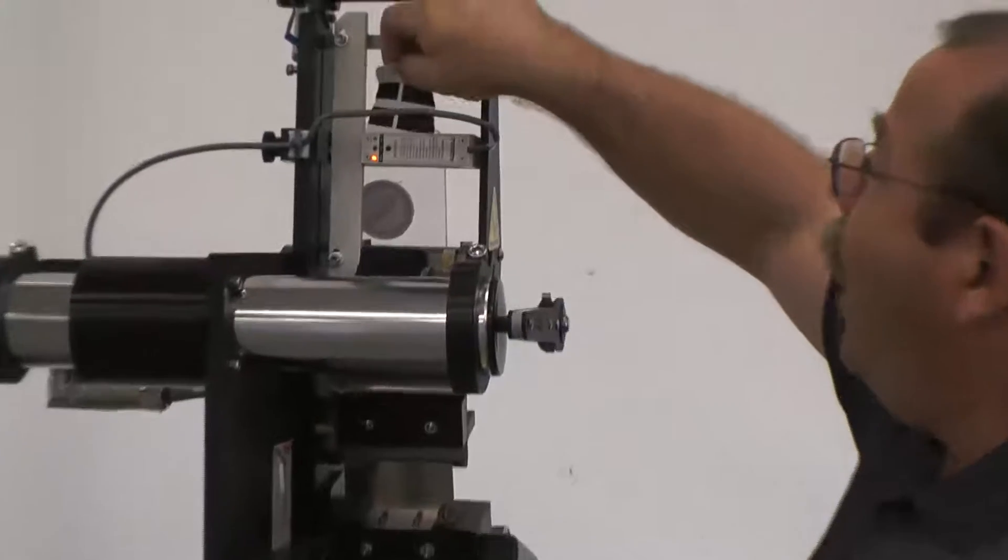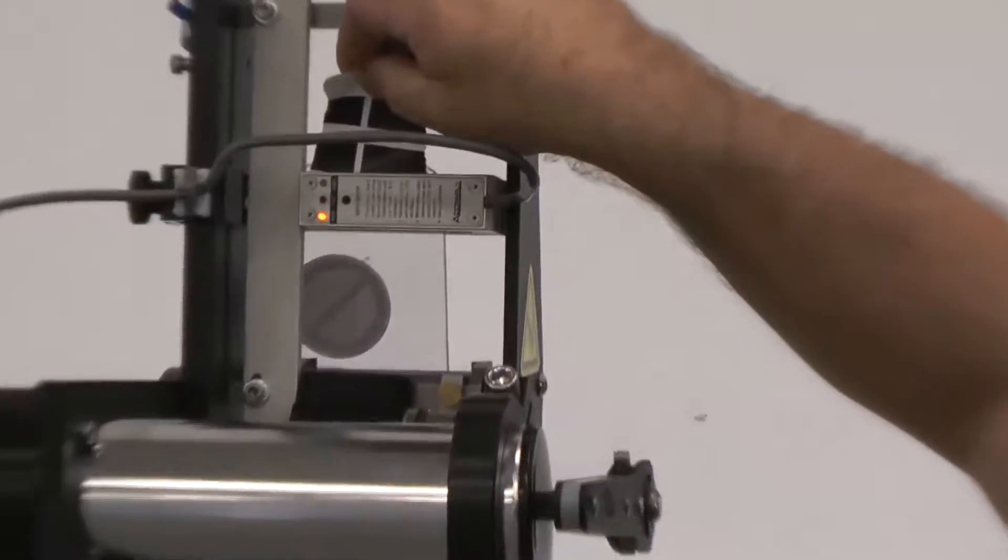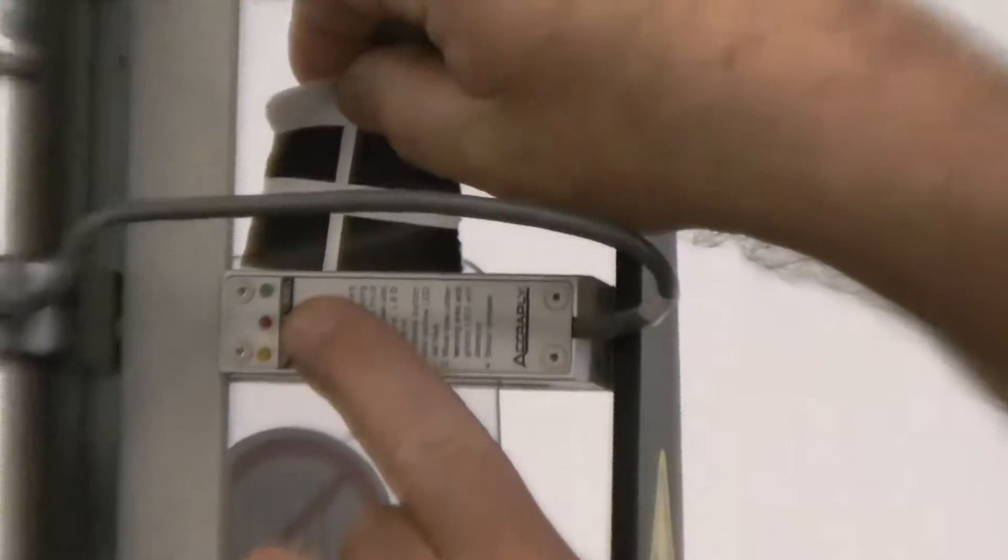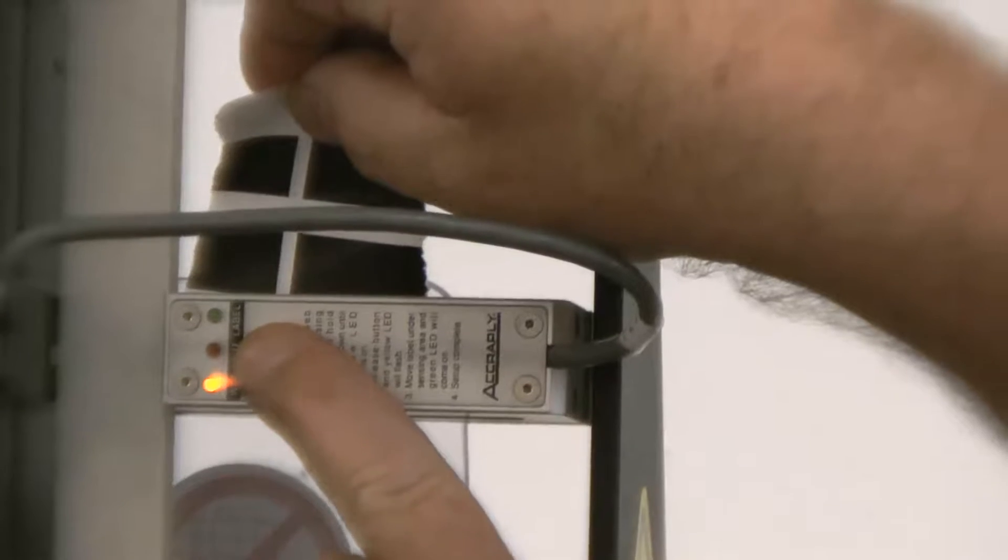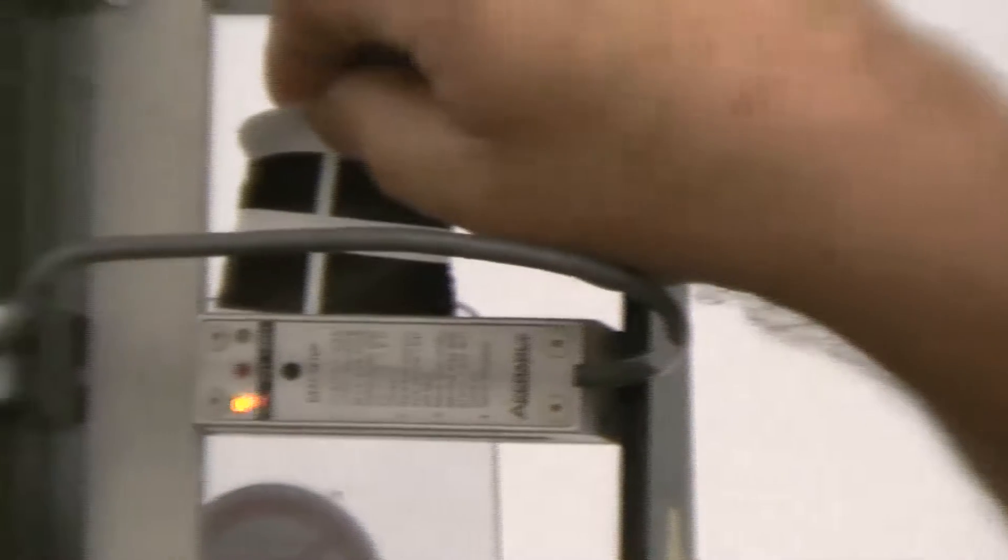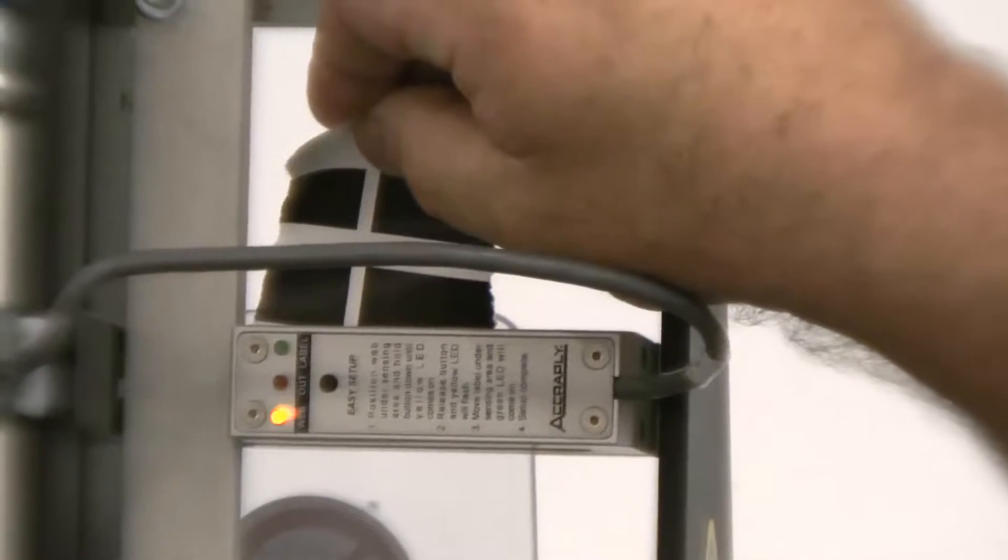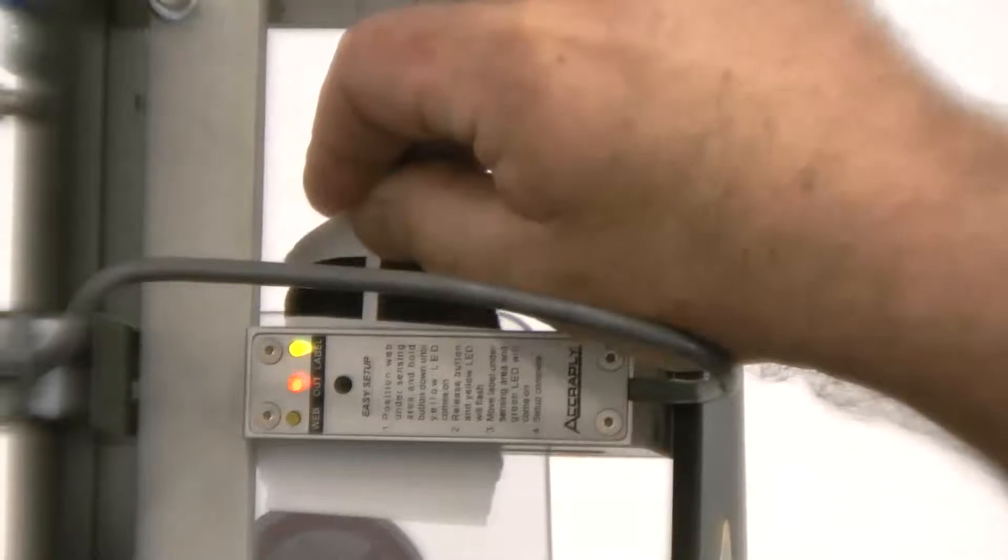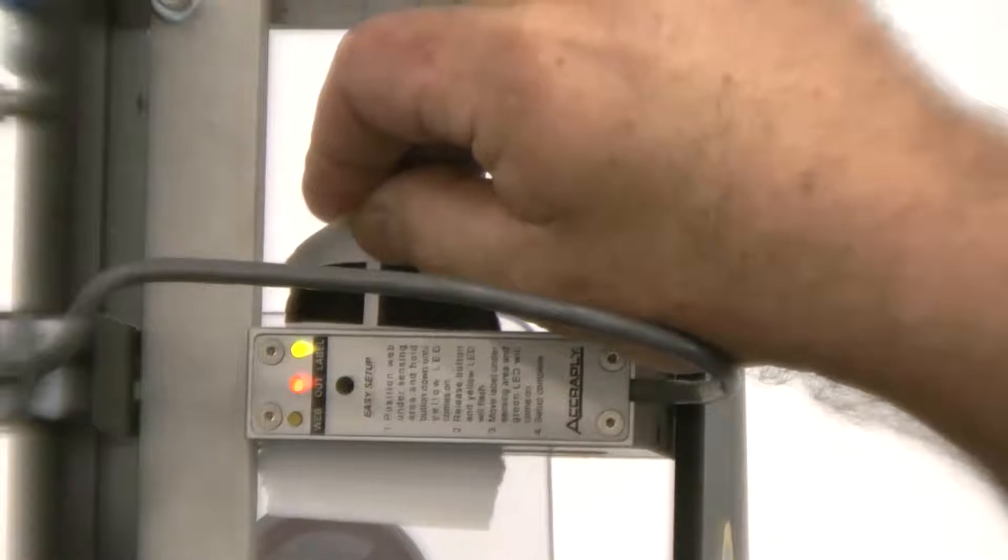Place only the white portion of the paper in the sensor. Press and hold the button for at least one second. When you let it go, the yellow light should be blinking. And then simply move the black into the sensor and it will train.